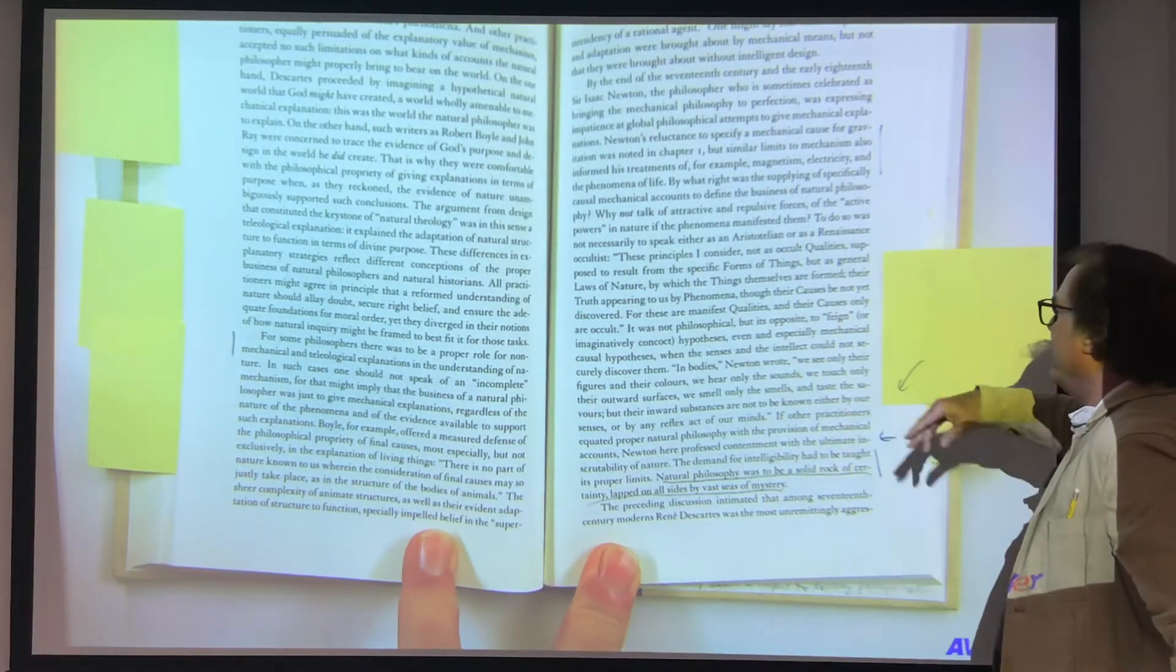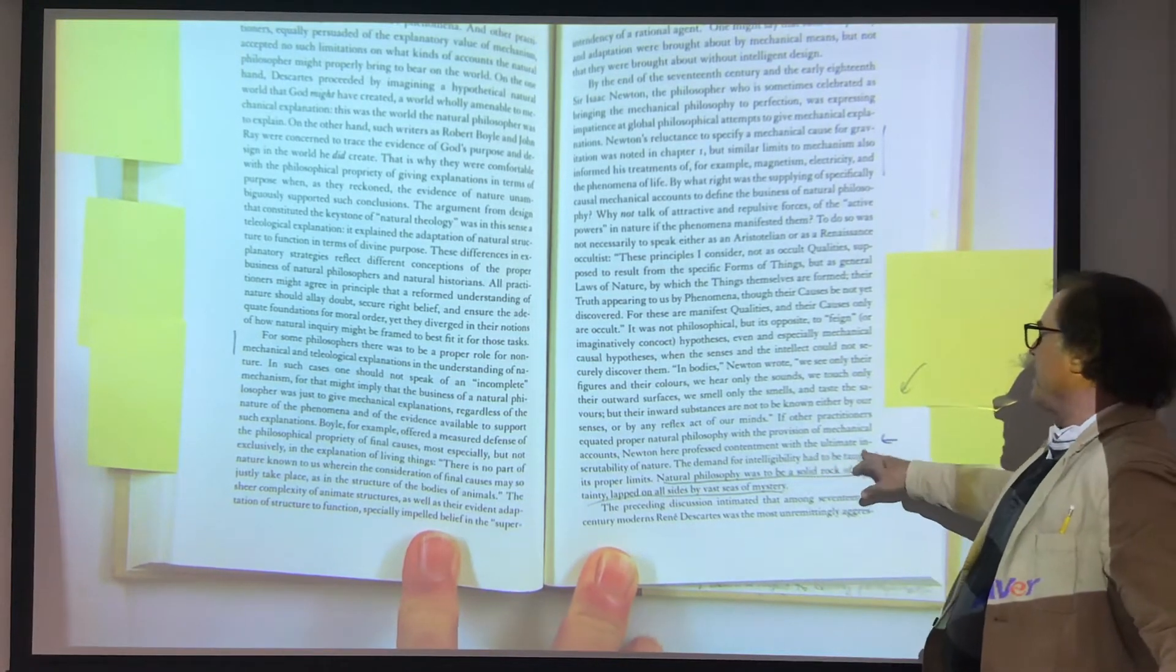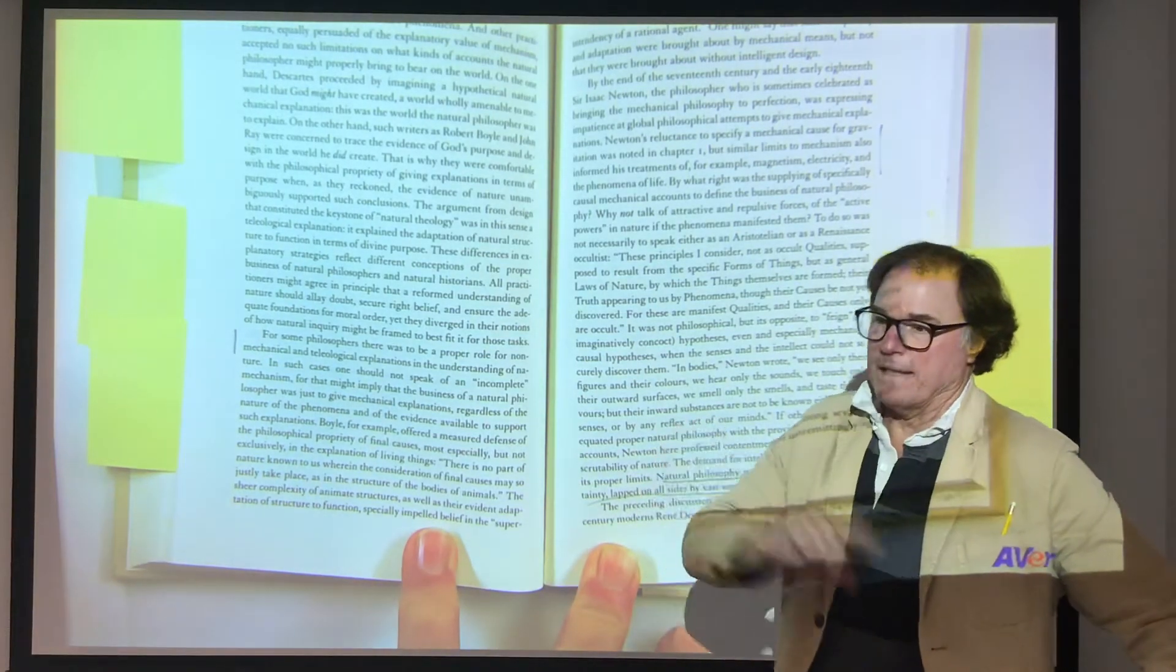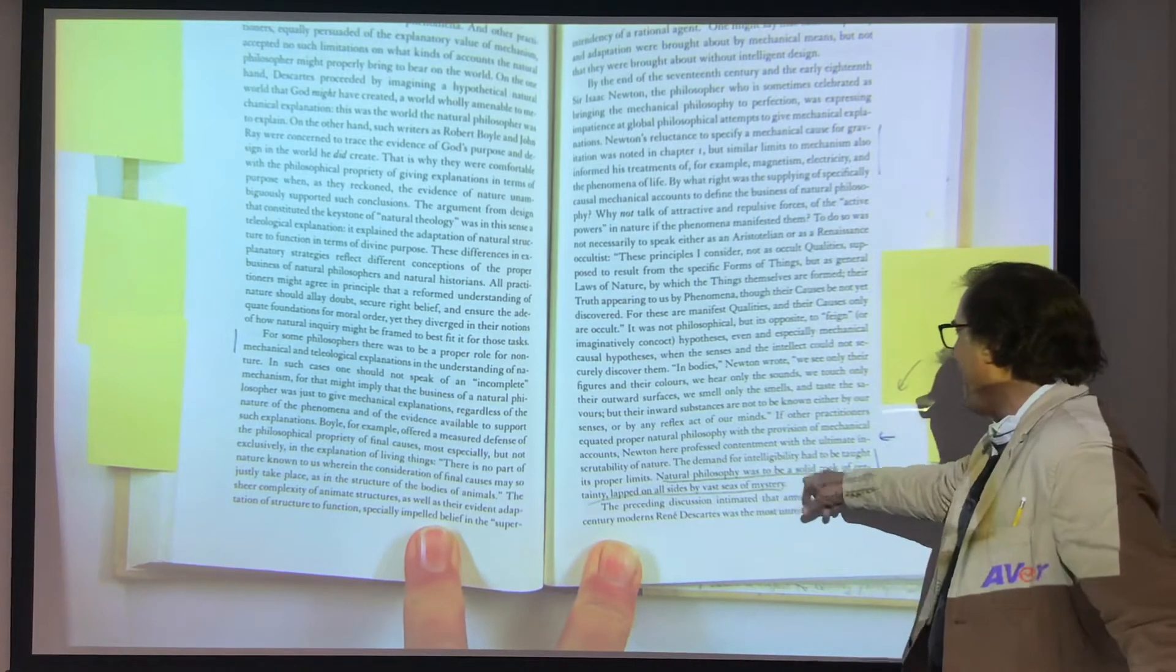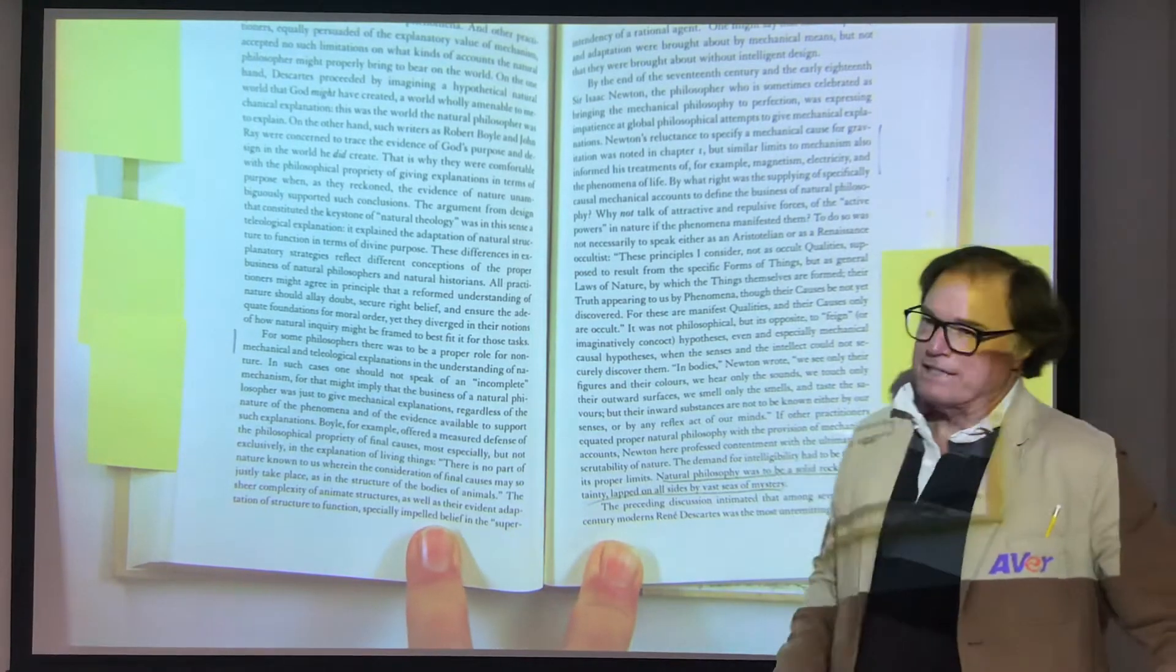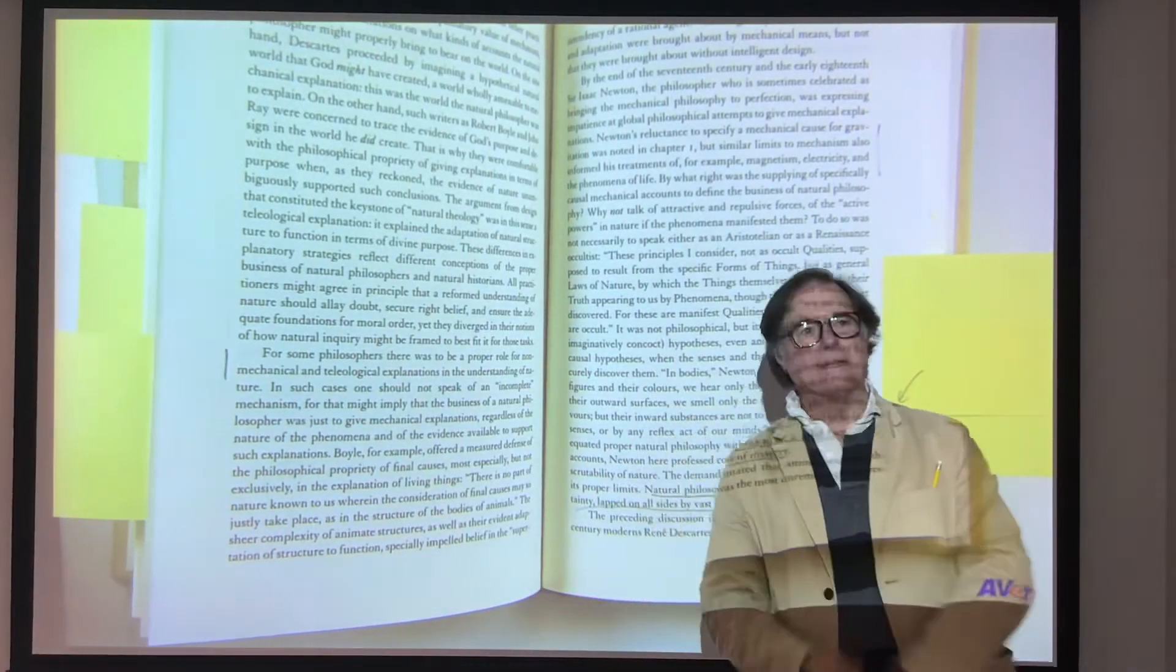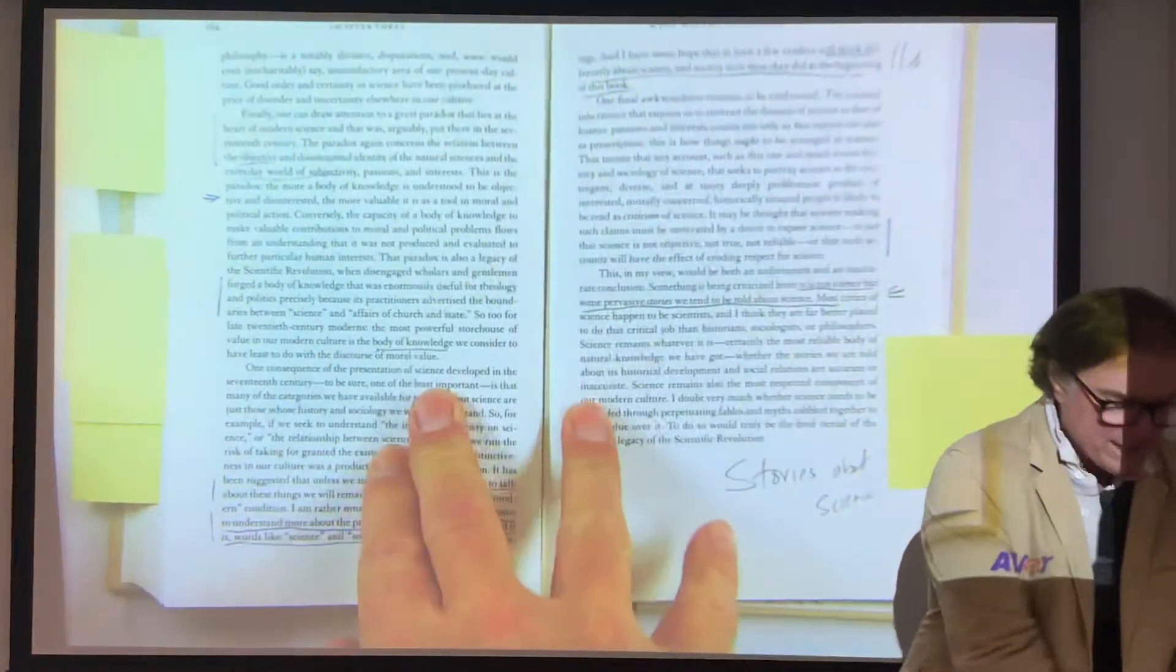Go back and look at Boethius - Boethius has a mechanical universe. There's this great machine that God's created, but then there's this wheel of fortune within it and other things. It's a complex world. Then he talks about Newton here - Newton professed contentment with the ultimate inscrutability of nature. The demand for intelligibility had to be taught its proper limits. Natural philosophy has to be a solid rock of certainty lapped on all sides by the seas of mystery.